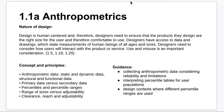Hello, here we go again. So we're just going to finish up with anthropometrics and a couple of important points about user population, reminding you a little bit about those percentile ranges, and then on to range of sizes versus adjustability, as well as clearance, reach, and adjustability. So some of these types of things.